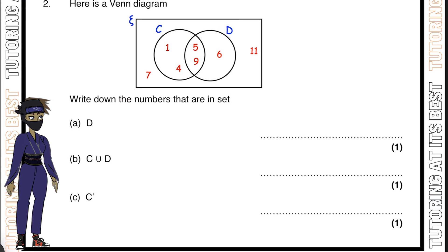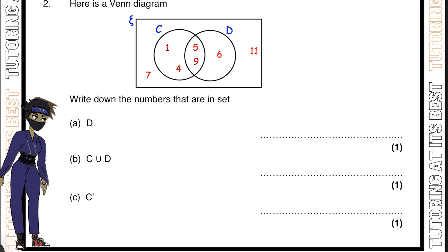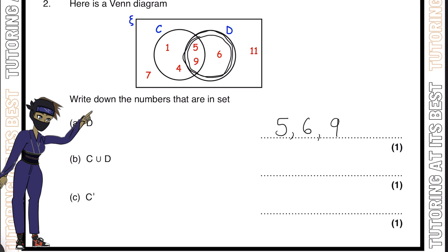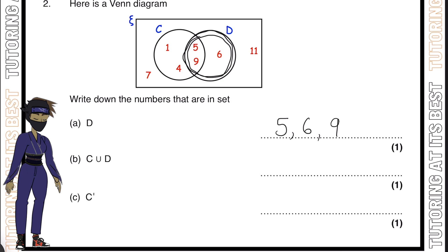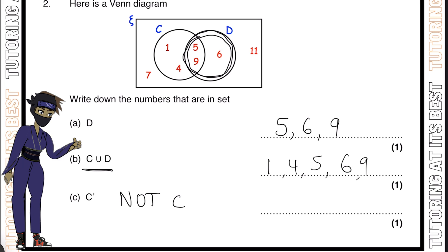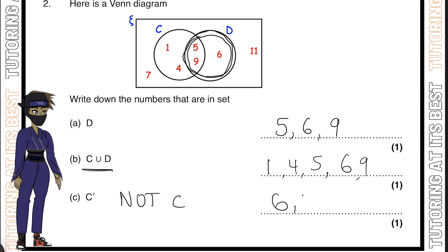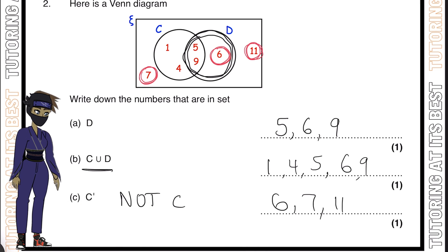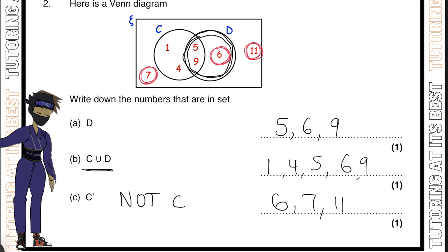Question 2: We've got another Venn diagram, and they want us to write down the numbers that are in set D. That is everything in this set here, which is 5, 6, and 9. Here we have the union, so C union D. That means everything in C and D, so we have 1, 4, 5, 6, and 9. Then for C prime, this says not C, everything in the Venn diagram except for what is in C. So we'd be left with 6, 7, and 11.